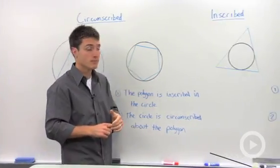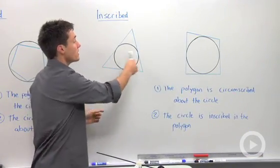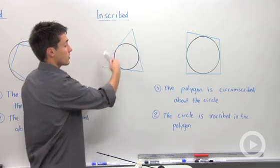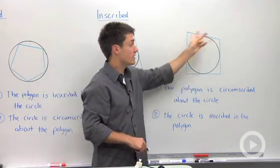Let's look at inscribed. With an inscribed circle, we have a circle that's within the polygon. Notice that here we have a triangle and a circle inside of it. And here we have a quadrilateral with a circle inside of it.